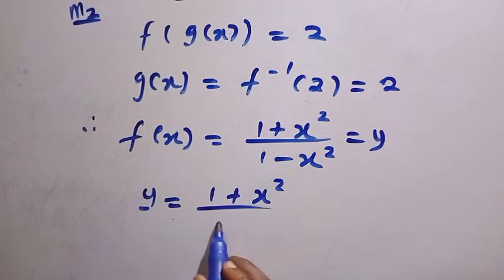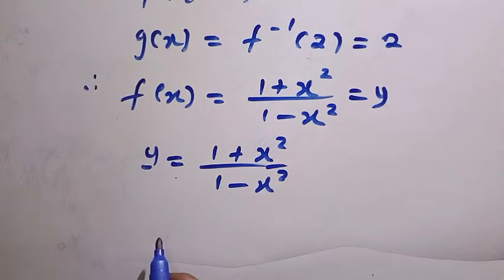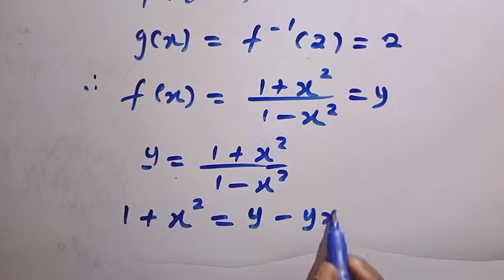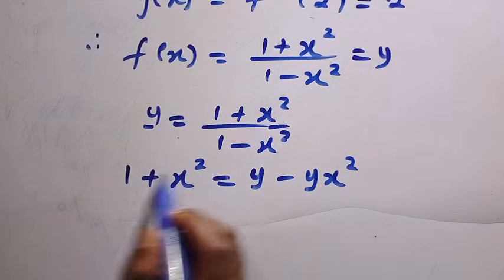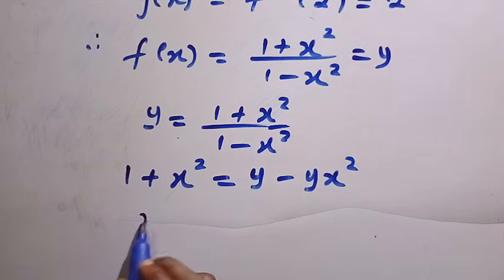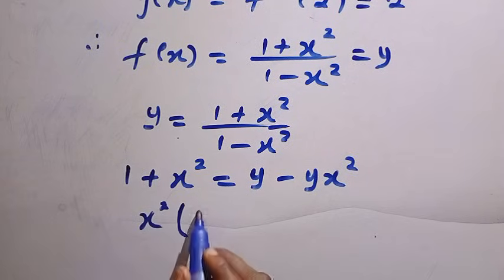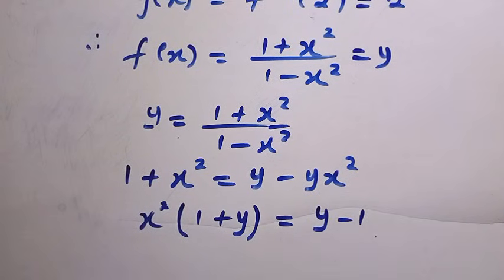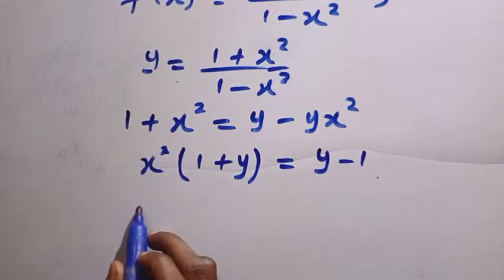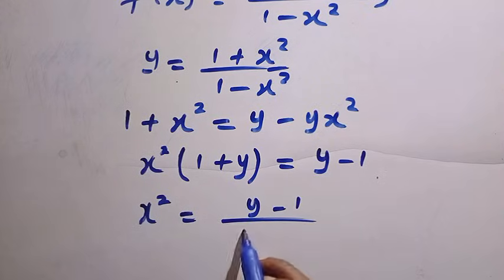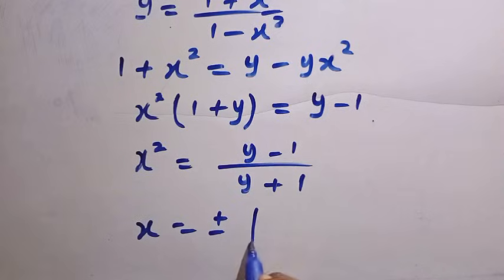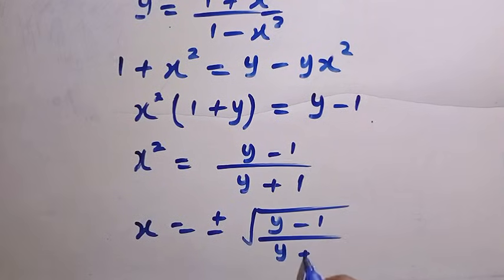So we let y = (1 + x²) / (1 − x²). By making x the subject of the formula, we cross-multiply to get 1 + x² = y − yx². Collecting terms and factoring out x², we get x²(1 + y) = y − 1. Dividing both sides by (1 + y), we have x² = (y − 1) / (y + 1). Taking the square root of both sides: x = ±√[(y − 1) / (y + 1)].